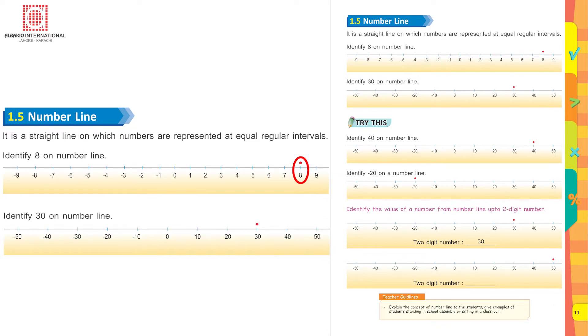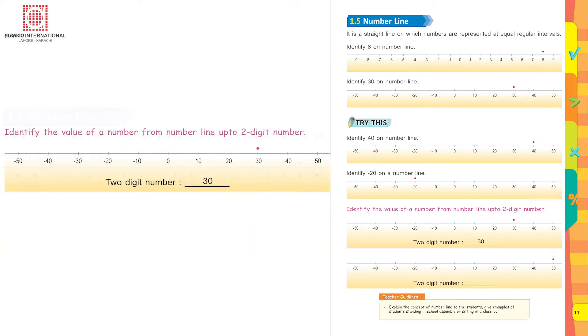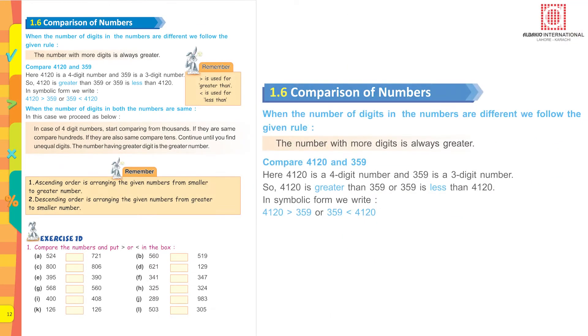Identify 30 on the number line. Point at zero. If you are looking for positive numbers, start looking at the right side. Yes, here is 30. Identify the value of a number from number line up to two-digit numbers. 30 is a two-digit number.